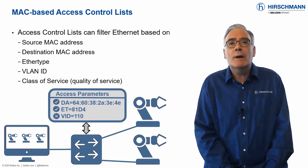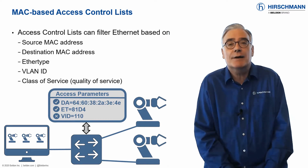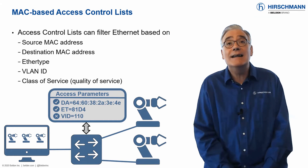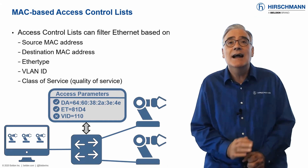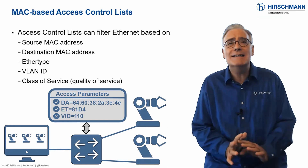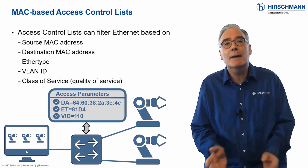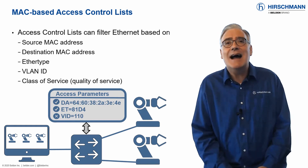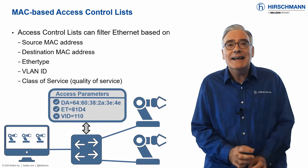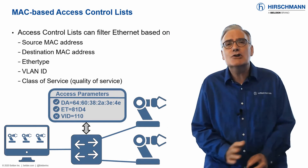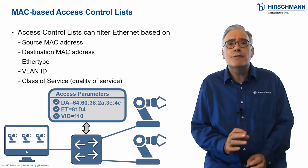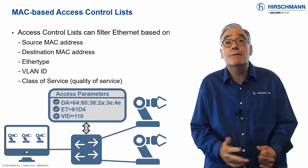So far we've looked at access control lists for TCP/IP traffic. But on OT networks, you will often find industrial protocols, and these protocols may not be based on TCP/IP. No problem — HiOS offers ACLs at Ethernet level. An Ethernet frame is much less complex than a TCP/IP packet, so there are fewer fields which can be used for filtering.